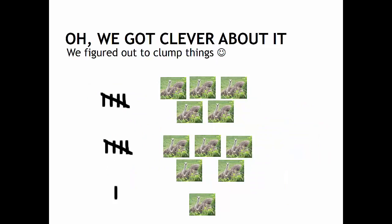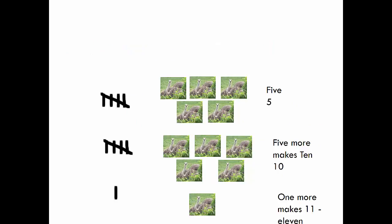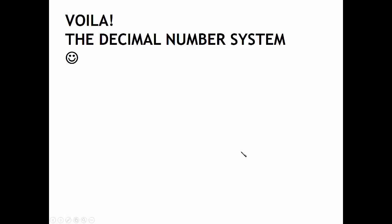We got clever about it. We figured out how to clump things. Still, it'd be better to have a system with some names, and we do: five, five more makes ten, one more is eleven. This is our decimal number system.